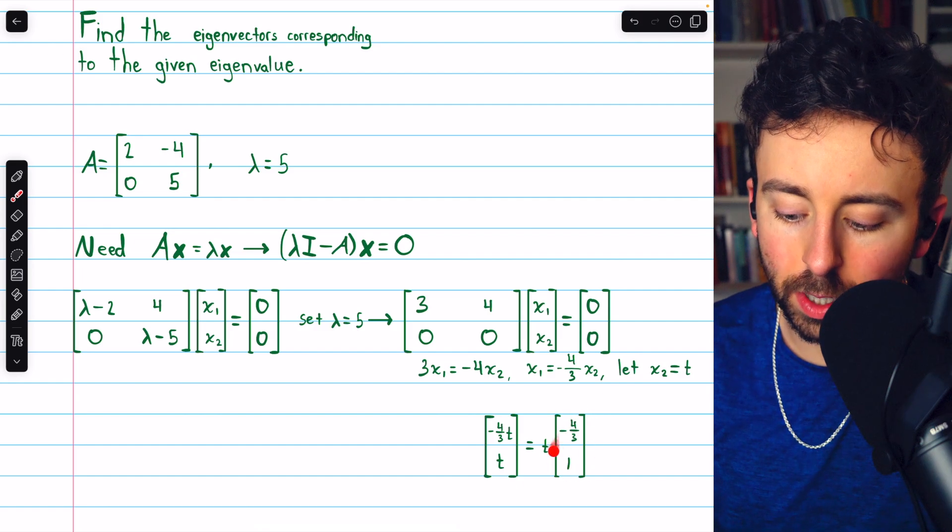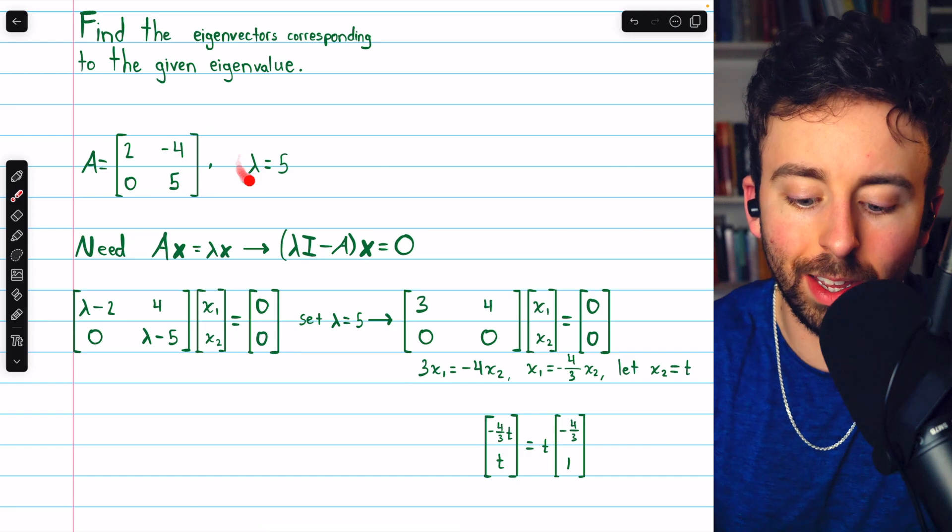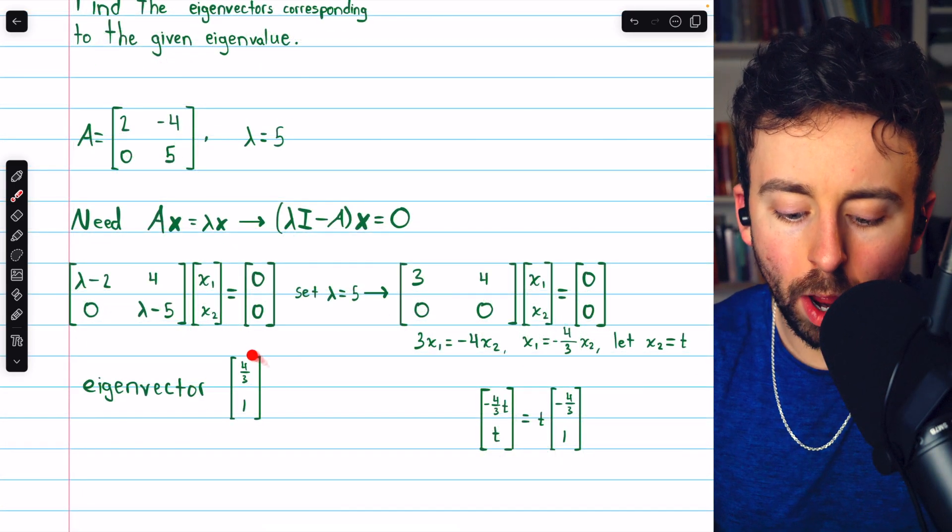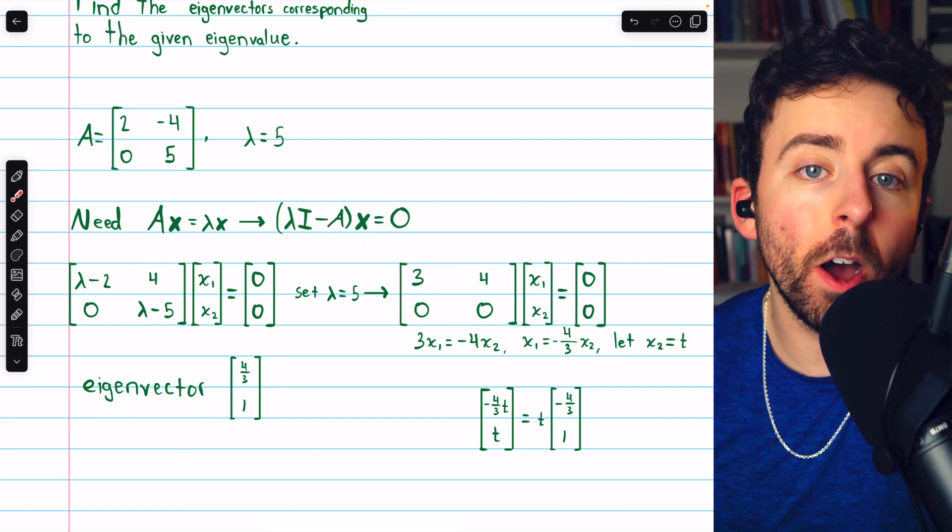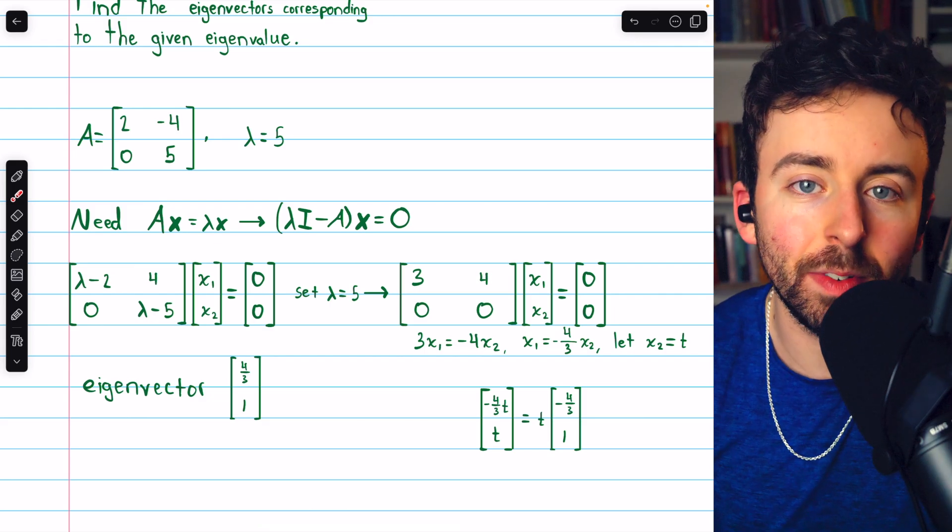And then this vector here is a basis for all eigenvectors corresponding to this eigenvalue. So if you put this problem in a calculator, you'll get one vector like this back. But really, it's all the non-zero scalar multiples of this vector that are the eigenvectors.